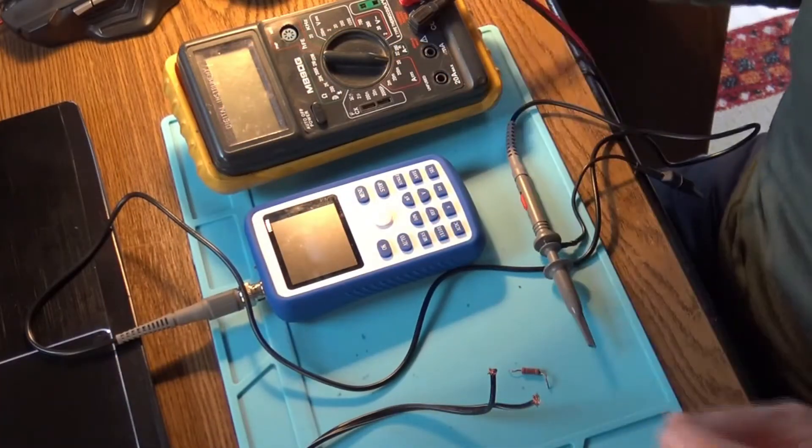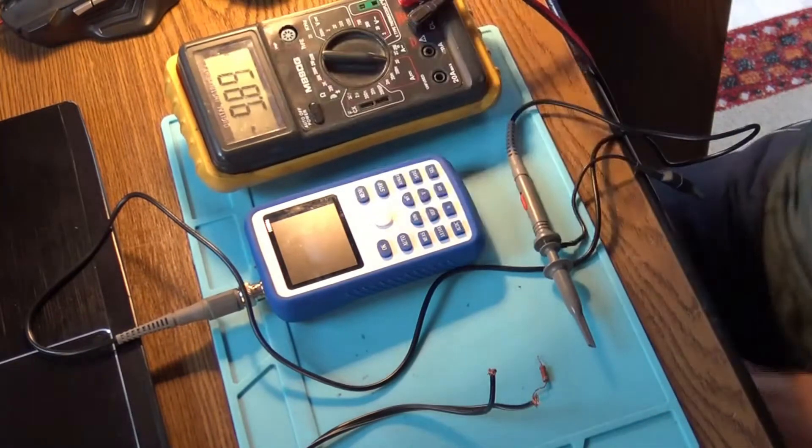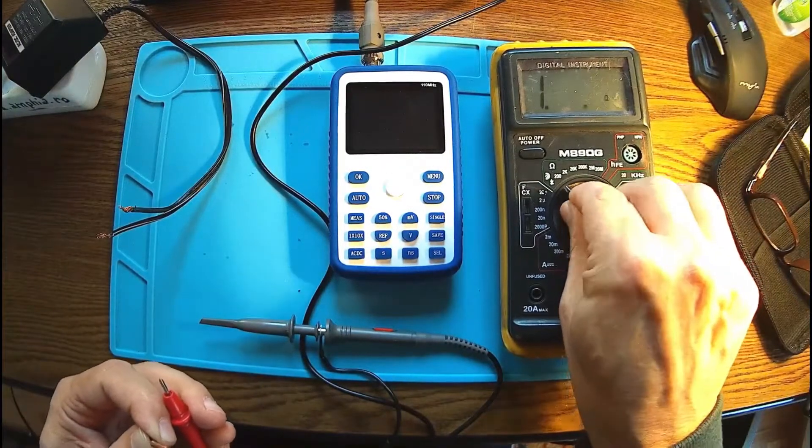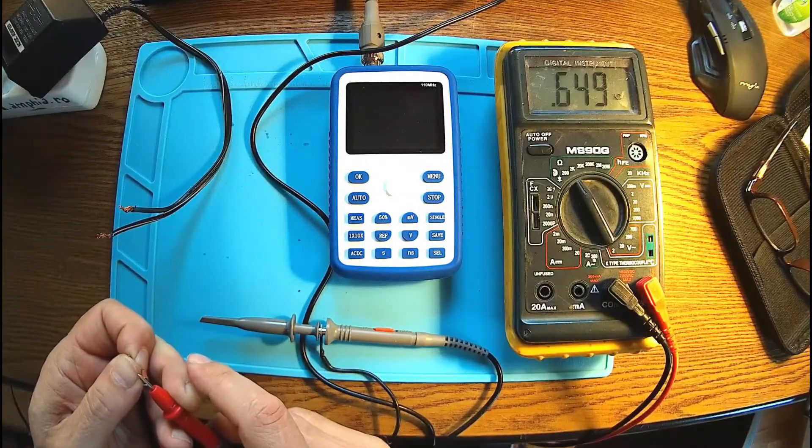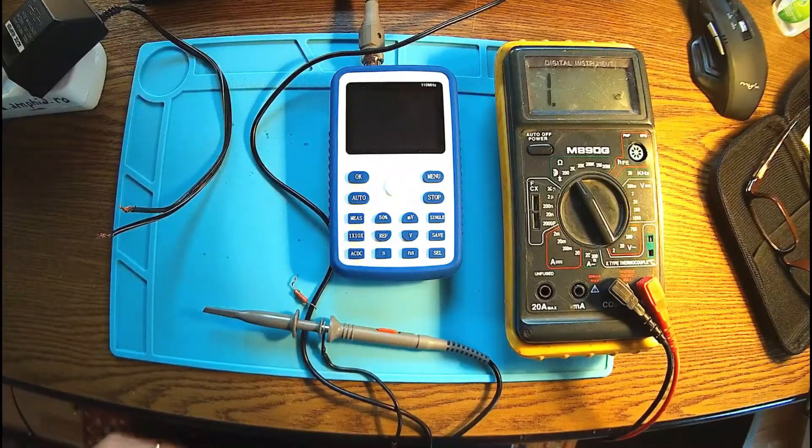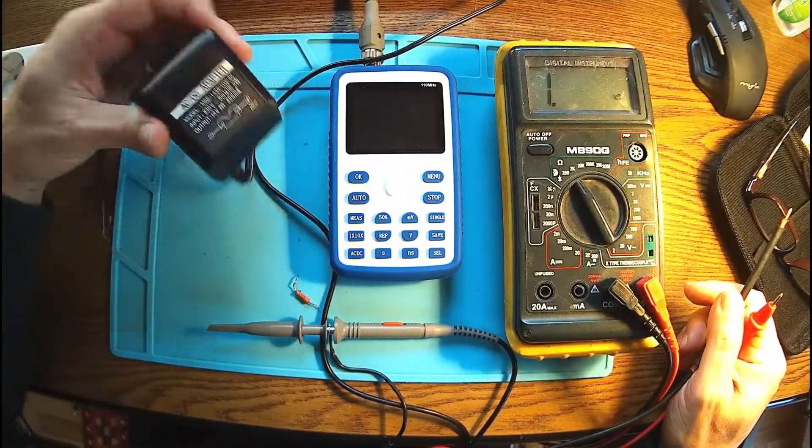We're going to try it now. I have a resistor here, let's check it. Okay, 650 ohms. And we have a power supply right here that delivers 14 volts at 250 milliamps.